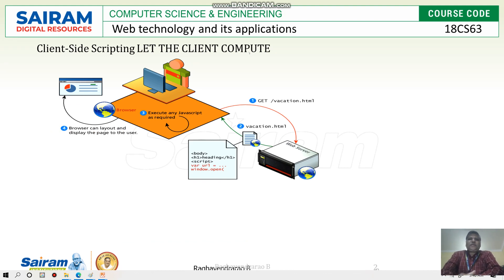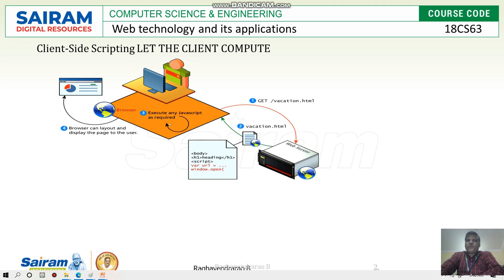Here we can see the client-side scripting language. There is a client — first it is going to ask for some HTML program, that is vacation.html, using the GET method. The web server is going to give the information about vacation.html. Then we go to the client-side, where the validations of this particular program are going to be validated on the client-side, and then it will be shown in the browser. If any mistakes are there, they are corrected on the client-side itself. So it is easy to manage by the server.